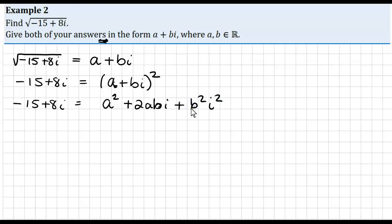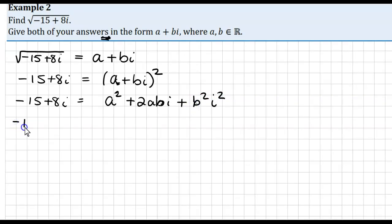Now, next thing then, we're going to change i squareds equal to minus 1s, so that's going to give me plus 2ABi minus B squared, because we're after changing that i squared to be equal to minus 1.